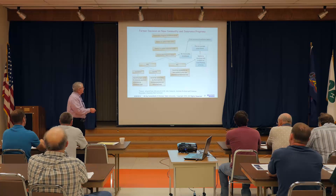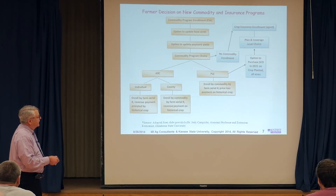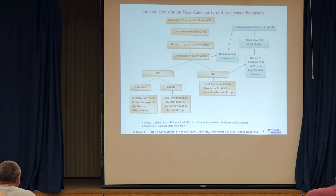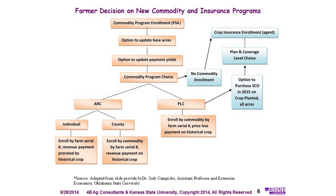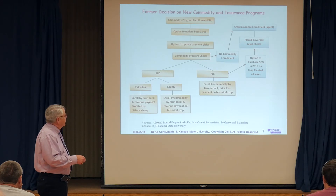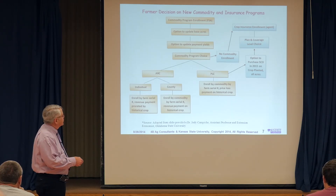The alternative is to take Price Loss Coverage. If you take PLC and the price drops below the strike price — the reference price for corn is $3.70 — we're talking about the marketing year average price, not the crop insurance price, not futures, not your local cash price. It's a national average weighted price for the entire marketing year. That means you won't get a payment until roughly a year after harvest. If there's a payment due, you won't see it until a year after harvest. For wheat, it's about 14 to 15 months after harvest. With PLC, yield doesn't have any impact — it just falls below the price and triggers the payment.